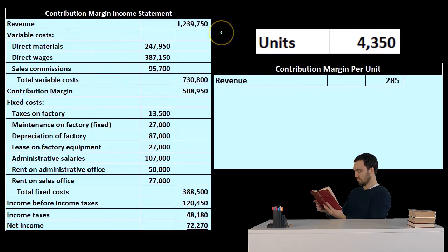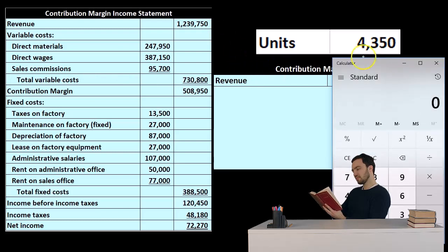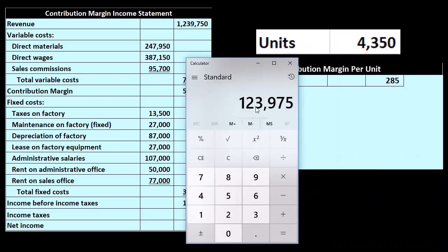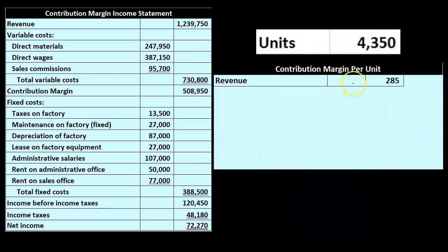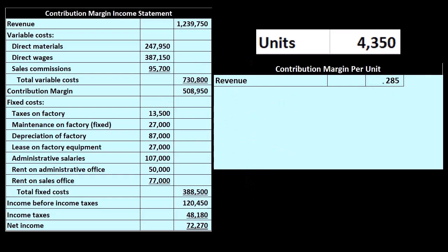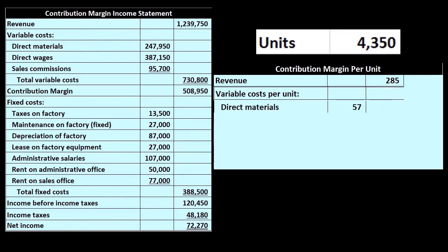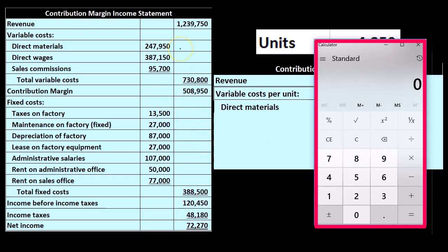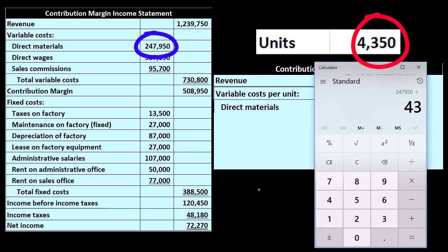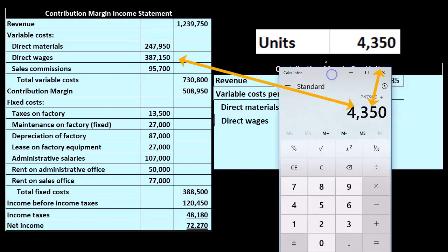For example, if costs are broken out by behavior, the revenue per unit is total sales of 1,239,750 divided by the number of units, 4,350, giving us 285. So the revenue per unit is 285. One of the assumptions we must make for this analysis is a fixed sales price. We can do the same thing with variable costs — taking 247,950 divided by 4,350 gives us 57 for the direct materials per unit.